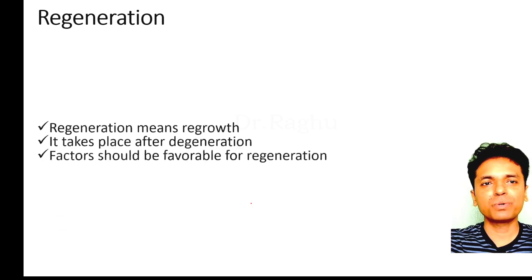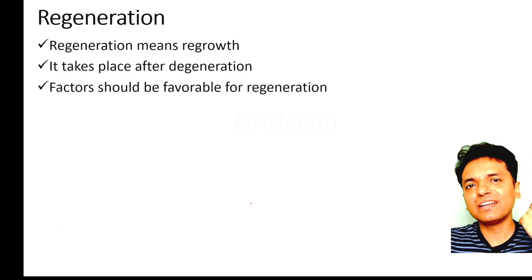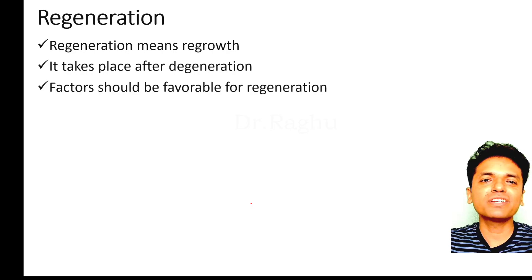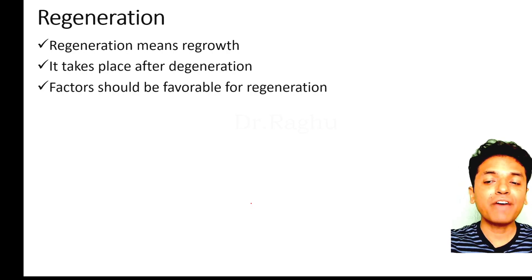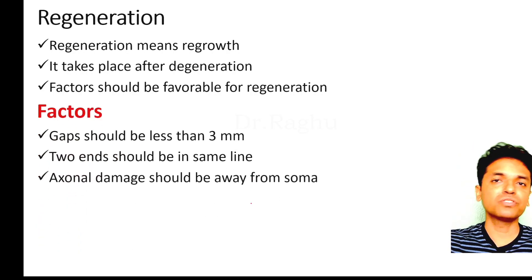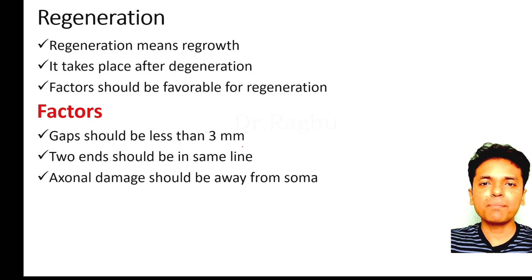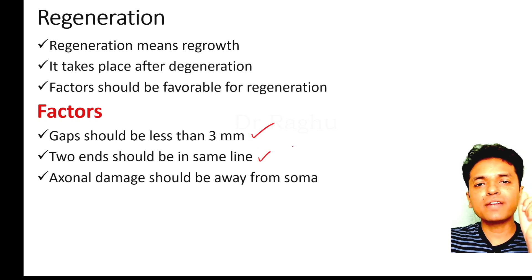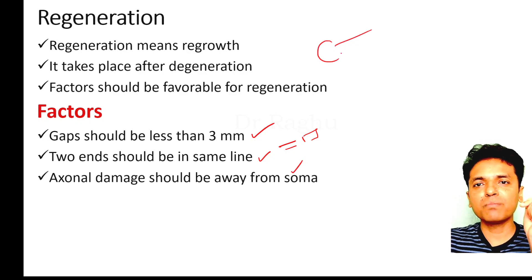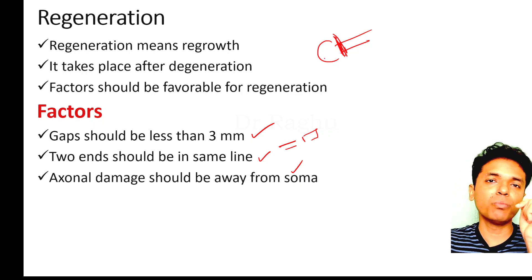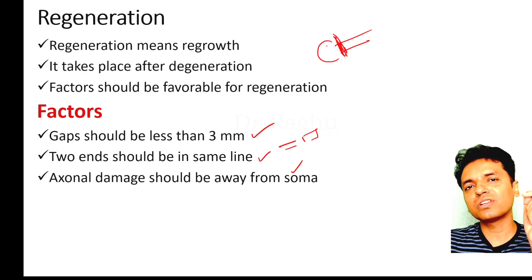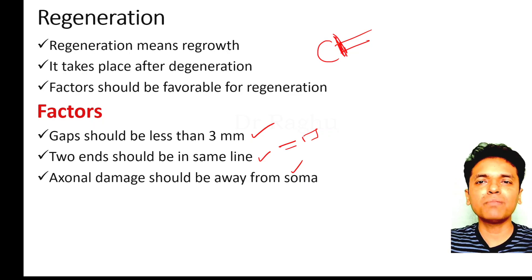Now, coming to regeneration — meaning regrowth — which takes place after degeneration. For regeneration to occur, the factors must be favorable. The gap between the two ends of the axon should be less than 3 millimeters. The two ends should be almost in the same line. The axonal damage should be away from the soma; if the damage is very close to the cell body, regeneration may not occur.